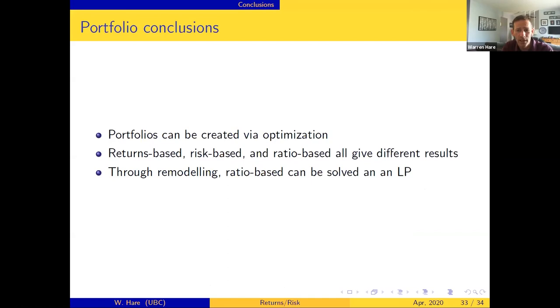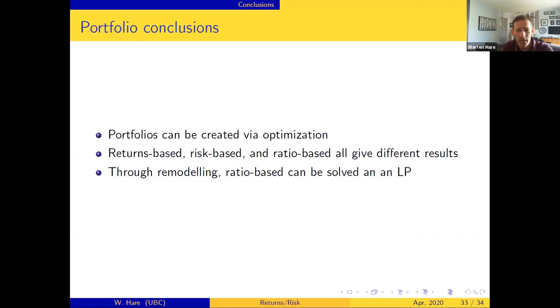And I think I'm going to finish just about on time. So I hope what you gathered from this, and it was a very quick talk and I hope it sunk in a little bit, is portfolios can be created by optimization. There are three competing techniques - returns based, risk based, ratio based. Through remodeling we've shown that the ratio based, if you're using conditional value at risk as the denominator as opposed to other values of risk, can be remodeled as an LP and therefore solved efficiently. And so now is actually a reasonable approach to working on such problems. And that is my talk for today, thank you.